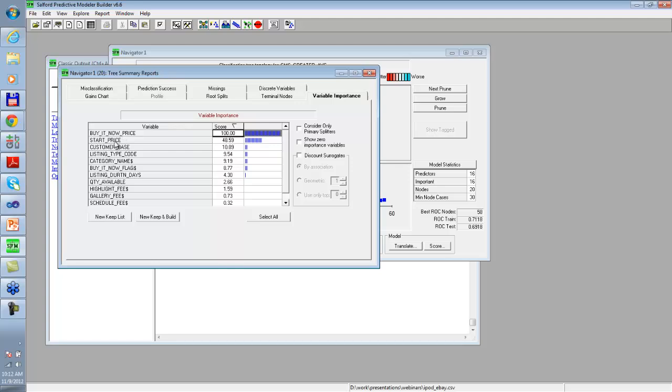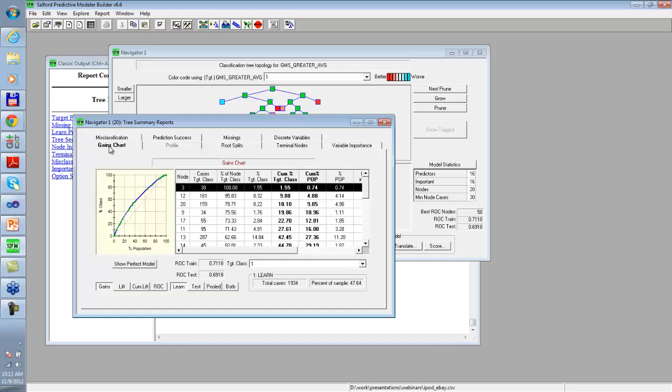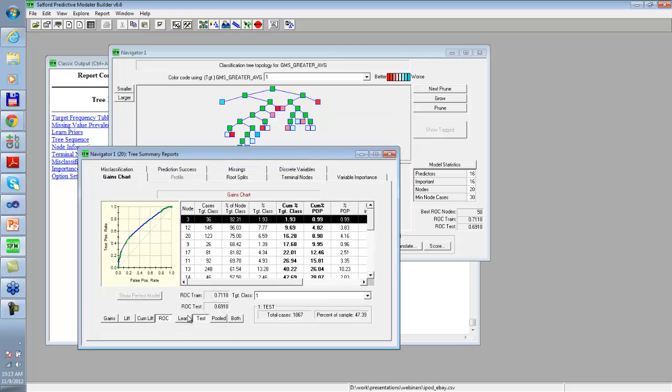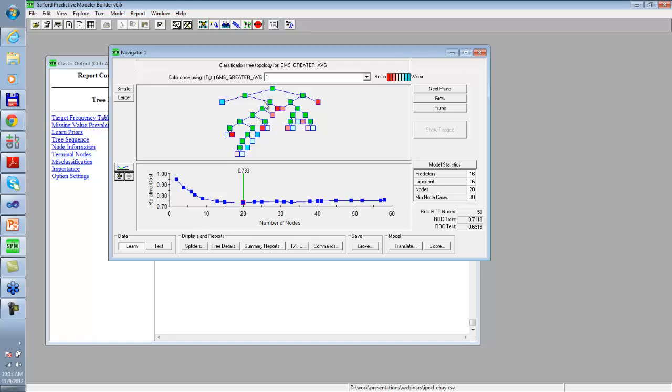What are the variables that were selected by the given model as most important? It turns out it's the buy it now price, start price, customer base, and listing type code. You're also interested in how well I'm doing on learn versus test sample, and what is the overall area under ROC curve. For the rest of this webinar, I will focus on area under ROC curve as a very popular measure of overall classification performance.